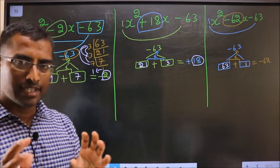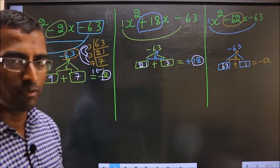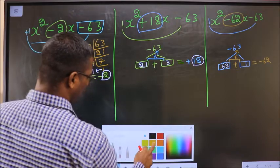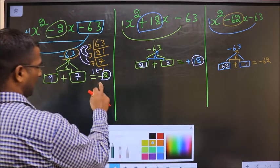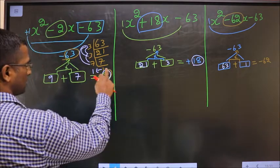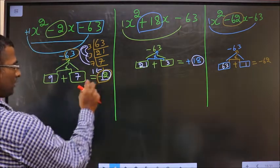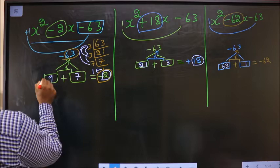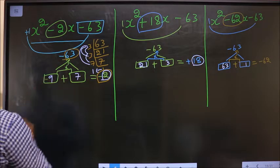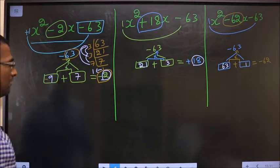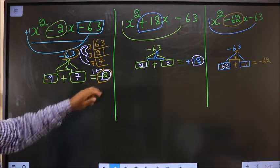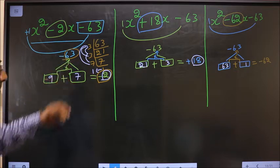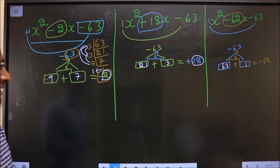Now adjust the signs. For the first expression I should get minus 2. That could only happen if I place minus before 9: minus 9 plus 7 is minus 2, and minus 9 into 7 is minus 63.